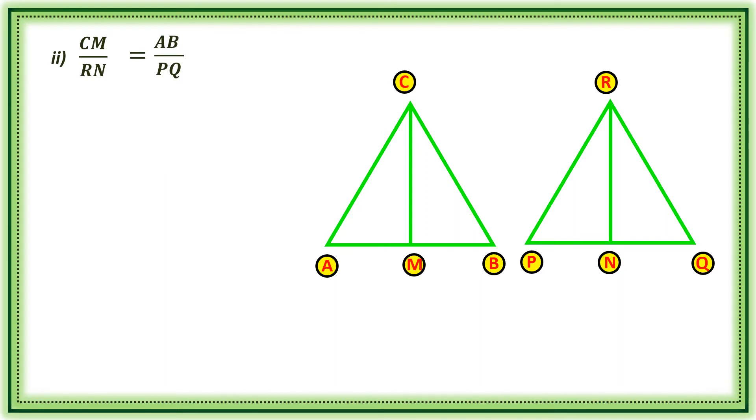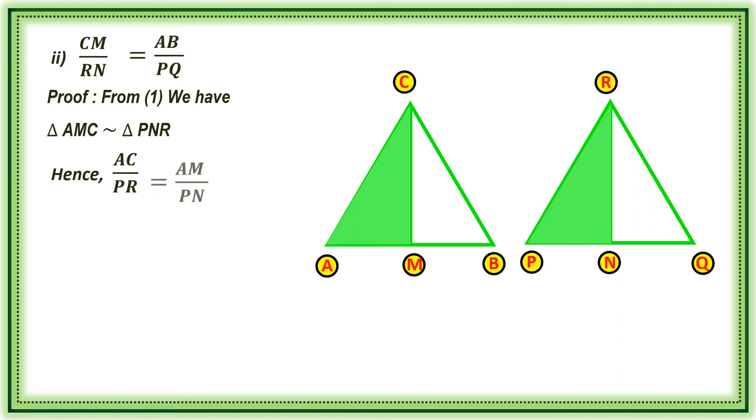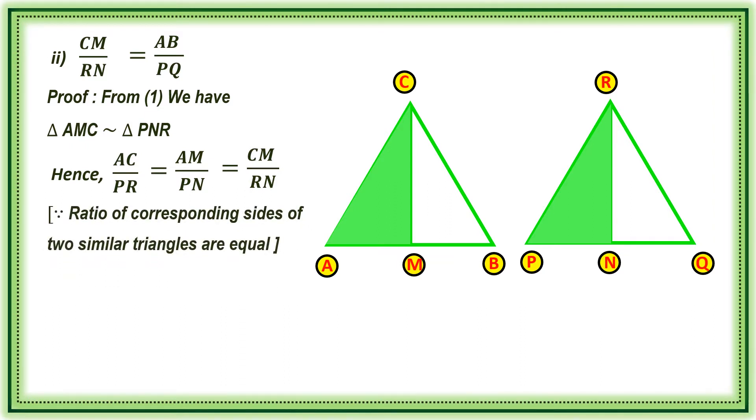CM by RN is equal to AB by PQ. From one, we have triangle AMC similar to triangle PNR. Hence, AC by PR is equal to AM by PN is equal to CM by RN. Since ratio of corresponding sides of two similar triangles are equal.